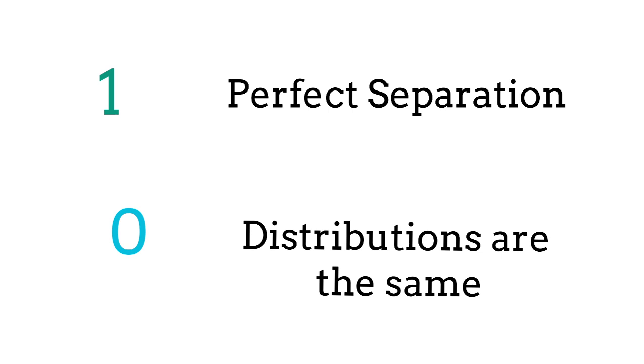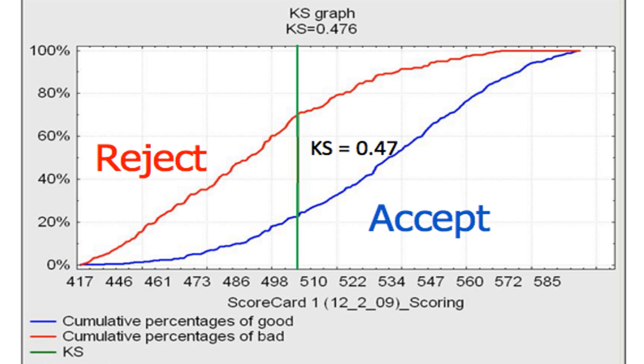In theory, we should choose a score that corresponds to where the maximum distance is located and use that score as our threshold where we will then reject every customer that has a credit score below that score threshold. Doing so will give us the ideal trade-off in accepting the largest percentage of good customers, while at the same time rejecting the largest percentage of bad customers.